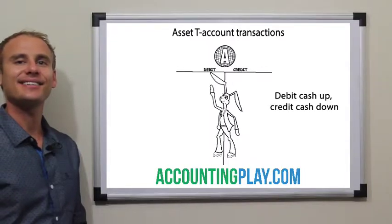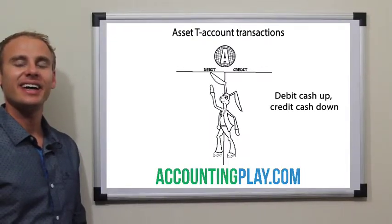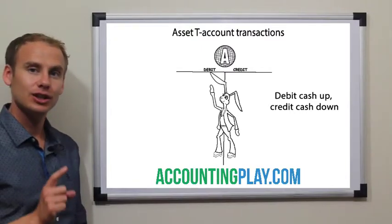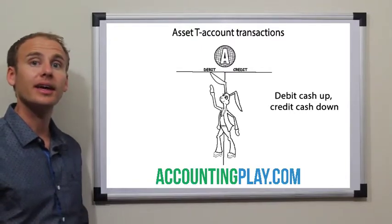Asset T-Account Transactions. Assets increase with a debit and decrease with a credit.